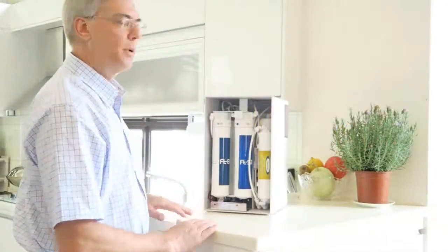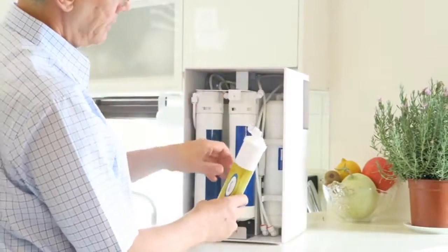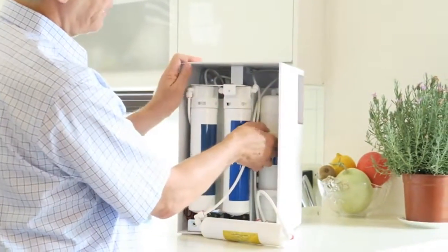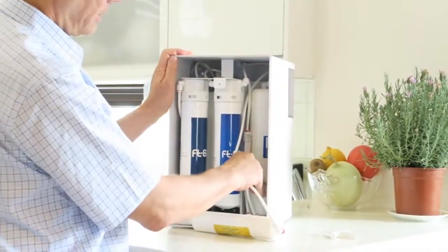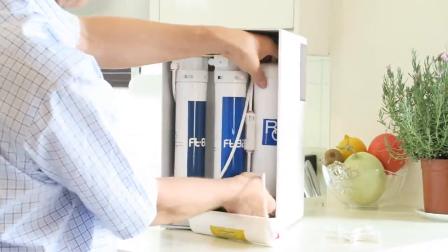And changing the RO membrane is also easy. First take out the post filter. And then take out the holding clamps. And then the RO membrane will also come out of its clamps.